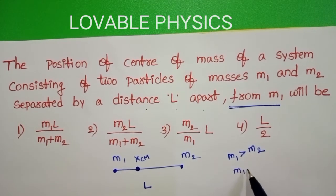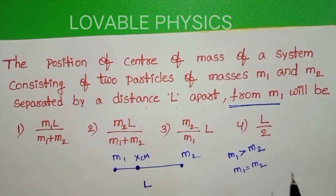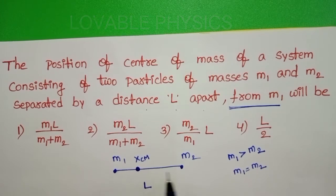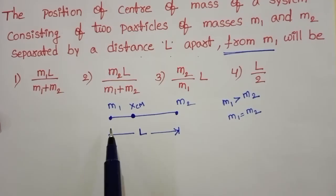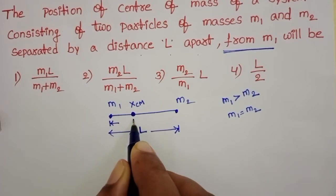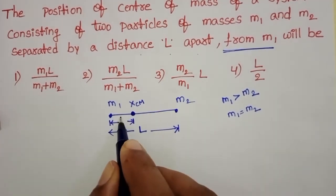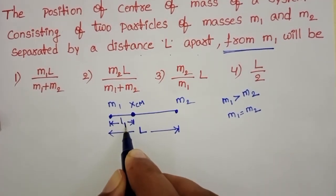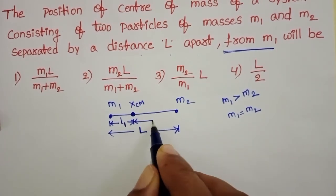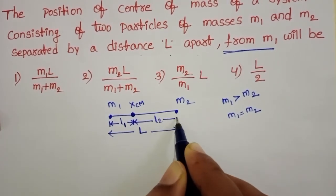Otherwise, if M1 is equal to M2, then the position of center of mass is exactly at the center between M1 and M2. Let the distance of center of mass from M1 be L1, and from M2 let it be L2.